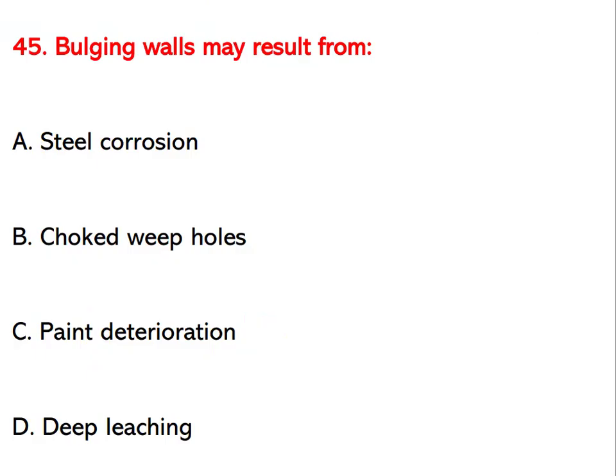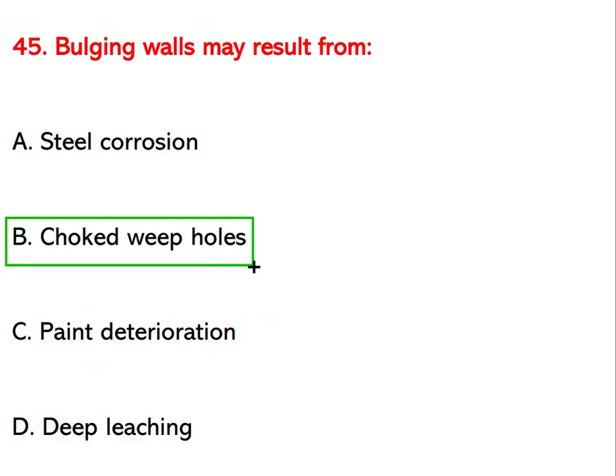Bulging walls may result from which cause? Options are steel corrosion, choked weep holes, paint deterioration, or deep leaching. The right answer is choked weep holes.